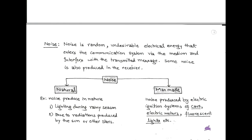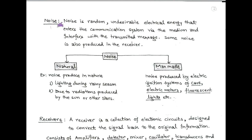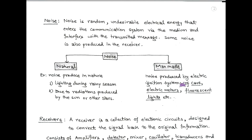In wireless communication, information is exchanged using a transmitting antenna and a receiving antenna. While propagating through a communication channel, there may be noise. Noise is random, undesirable electrical energy that enters the communication system via the communication channel and interferes with the transmitted messages. Noise may be of two types: natural and man-made. Natural noise is produced by nature — for example, lightning during rainy season, or radiation produced by the sun or other stars. Man-made noise is produced by electric systems of cars, electric motors, fluorescent lights, etc.